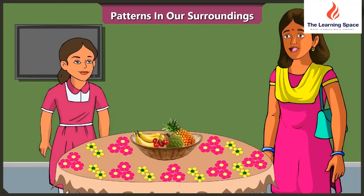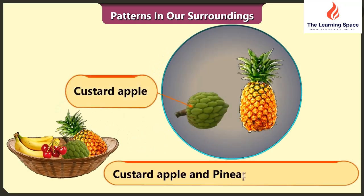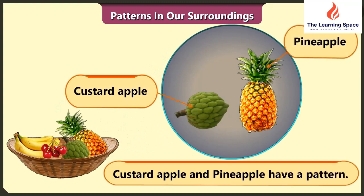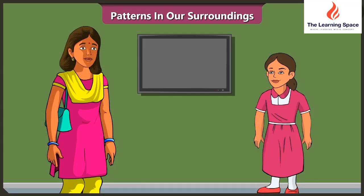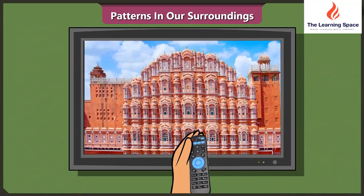Well done, Vinny. Very good. Now, can you tell which of the fruits on the table have a pattern? There is a pattern in custard apple and pineapple. Vinny, please turn on the TV. Hey mummy, is there a pattern on this building as well?